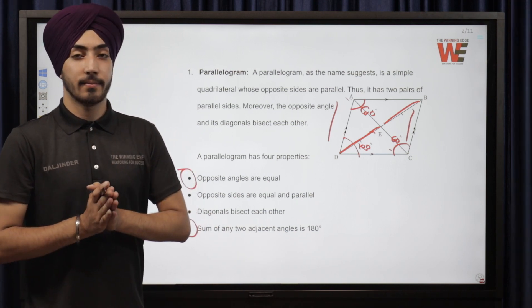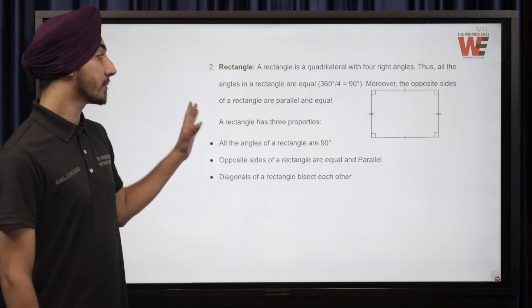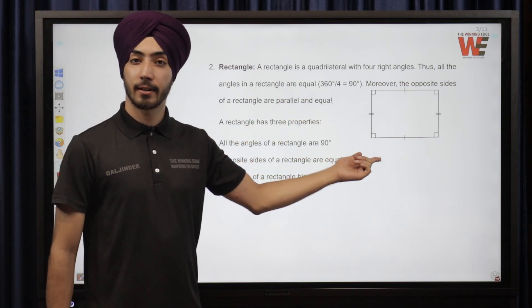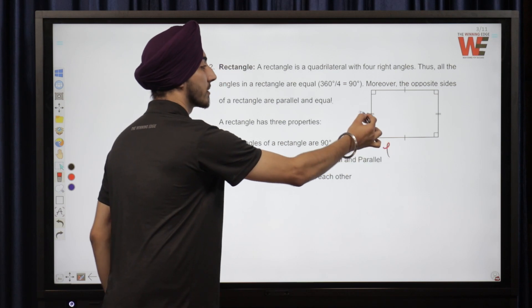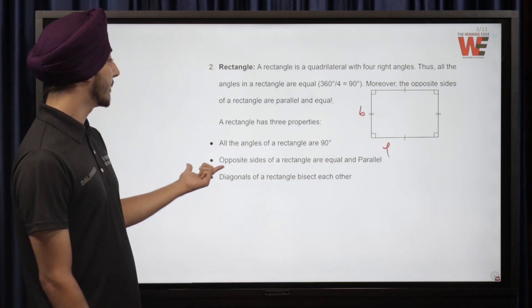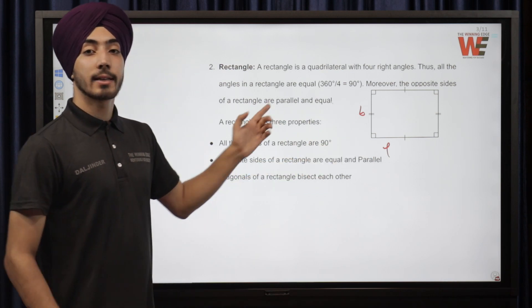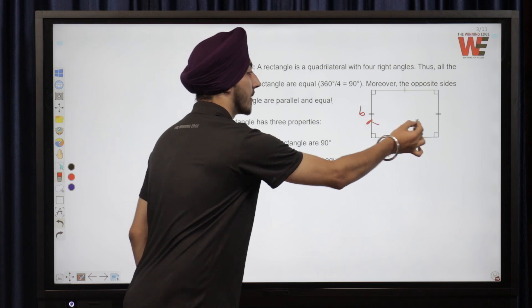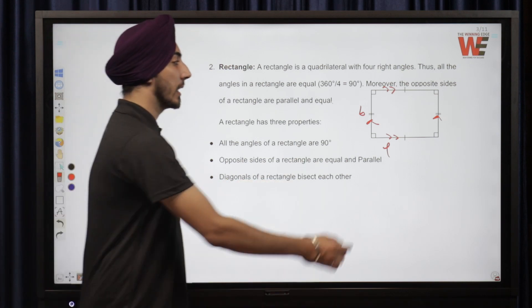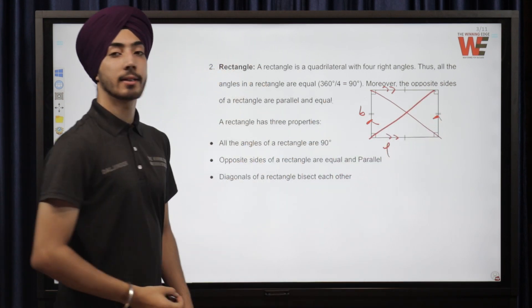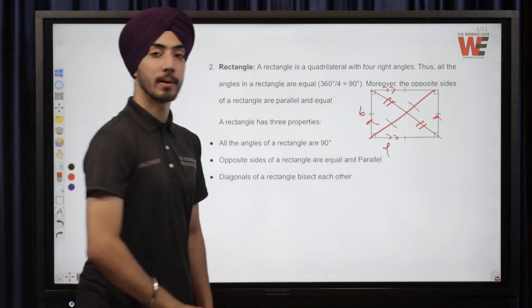The next type of quadrilateral is a rectangle. A rectangle is a four-sided figure with all angles equal to 90 degrees. It has equal and opposite sides — the longer side is called length and the shorter side is called breadth. Opposite sides of a rectangle are equal and parallel. The diagonals of a rectangle also bisect each other, dividing each other into equal parts, similar to a parallelogram.